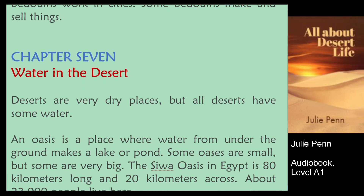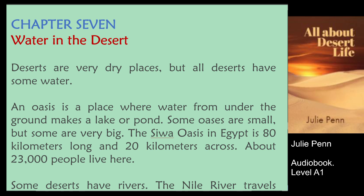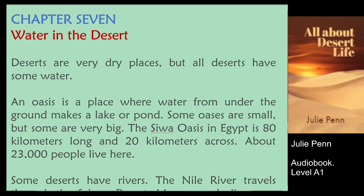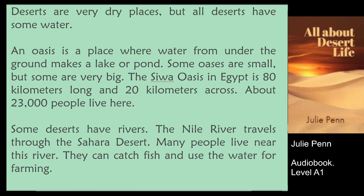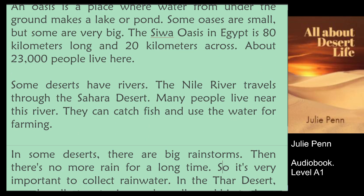Chapter 7: Water in the Desert. Deserts are very dry places, but all deserts have some water. An oasis is a place where water from under the ground makes a lake or pond. Some oases are small, but some are very big. The Siwa Oasis in Egypt is 80 kilometers long and 20 kilometers across. About 23,000 people live here.